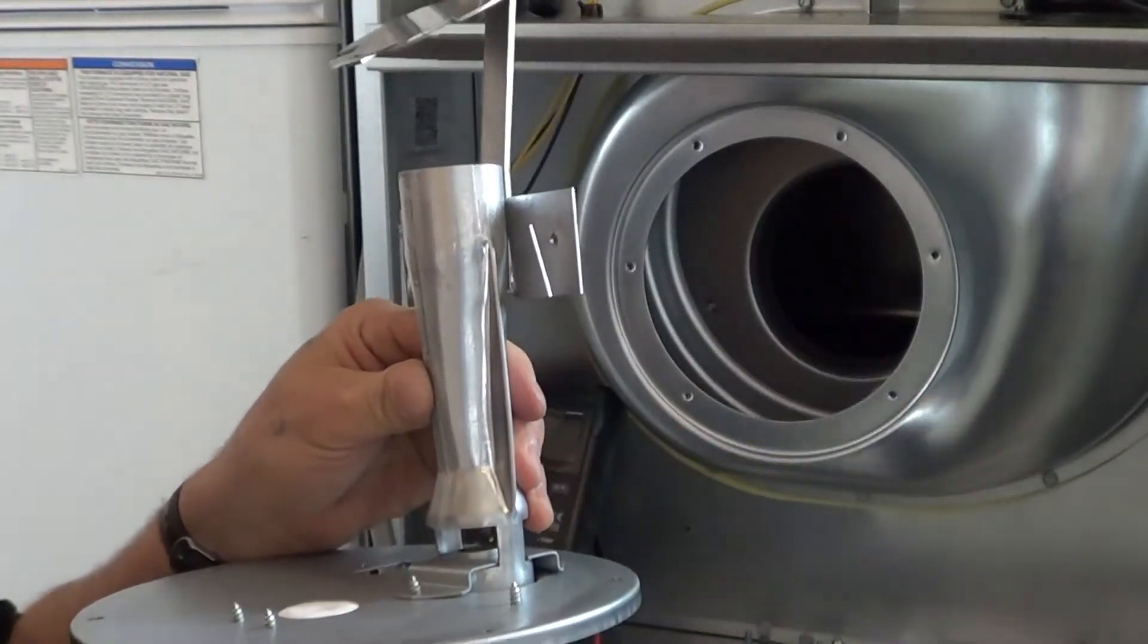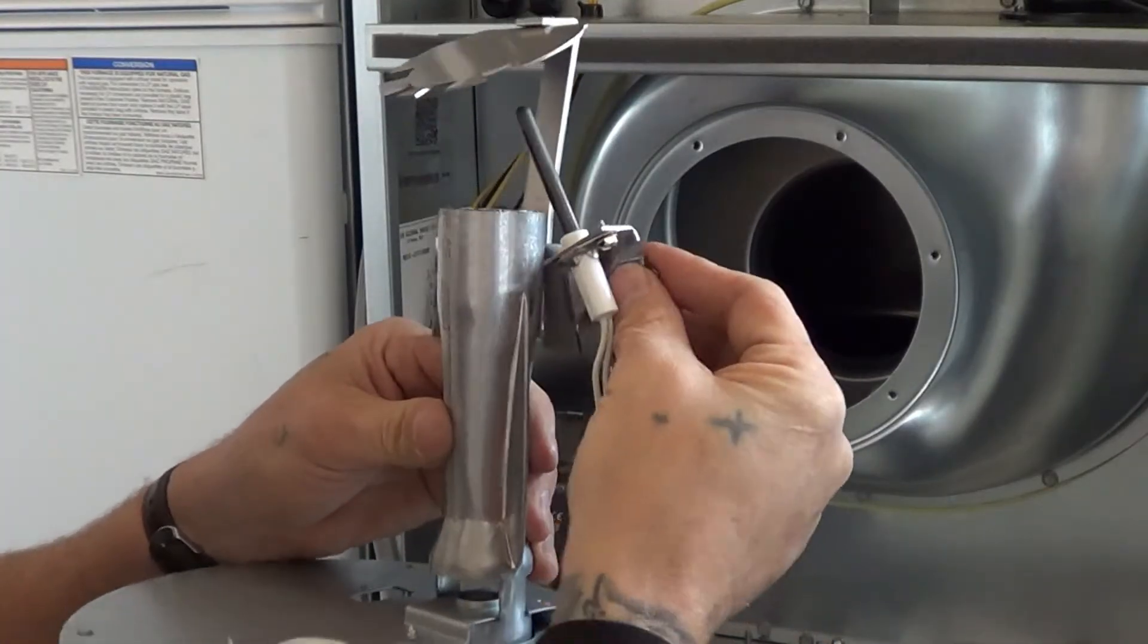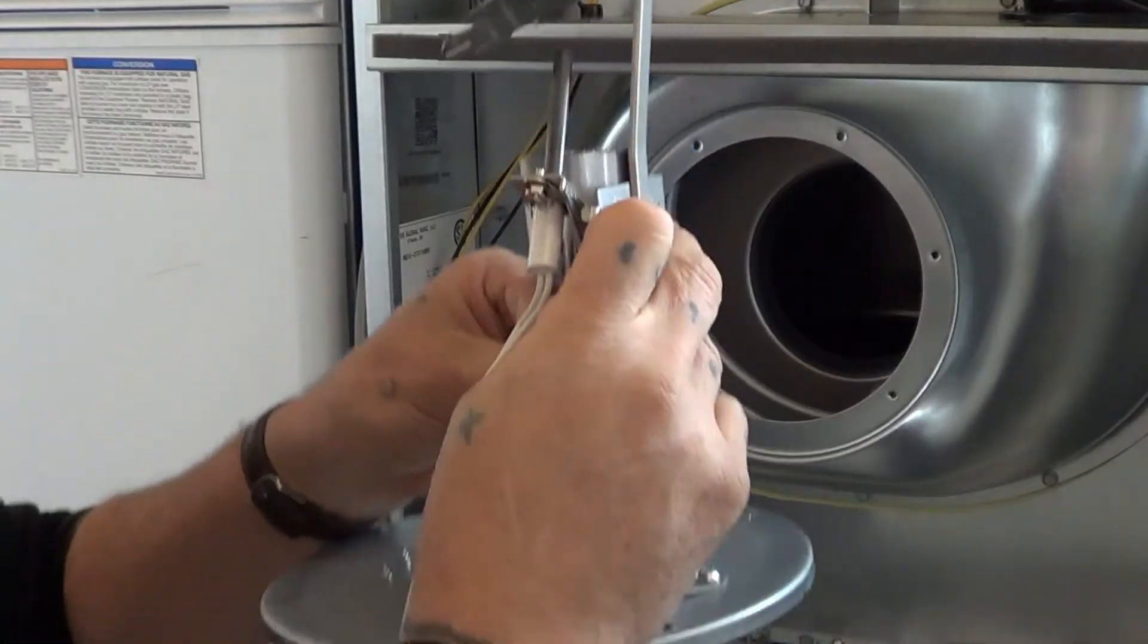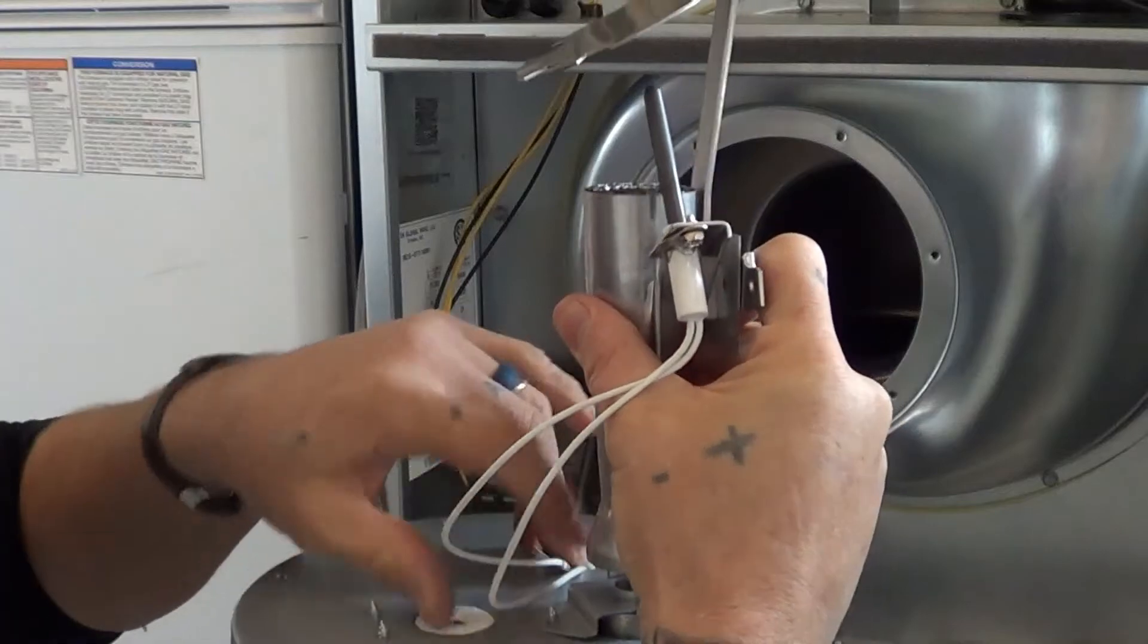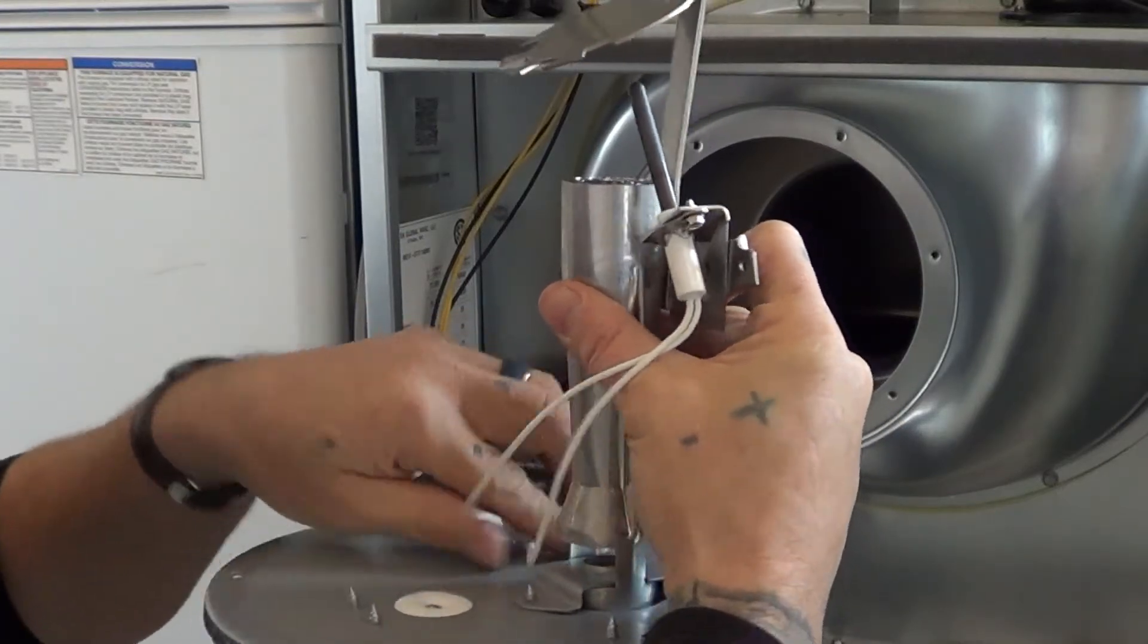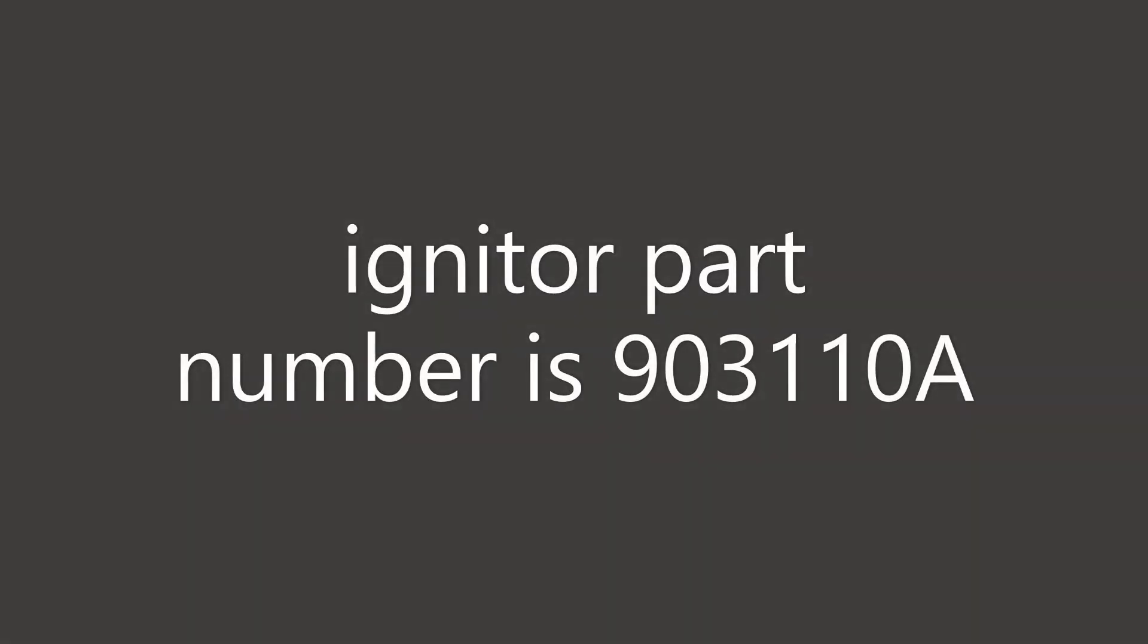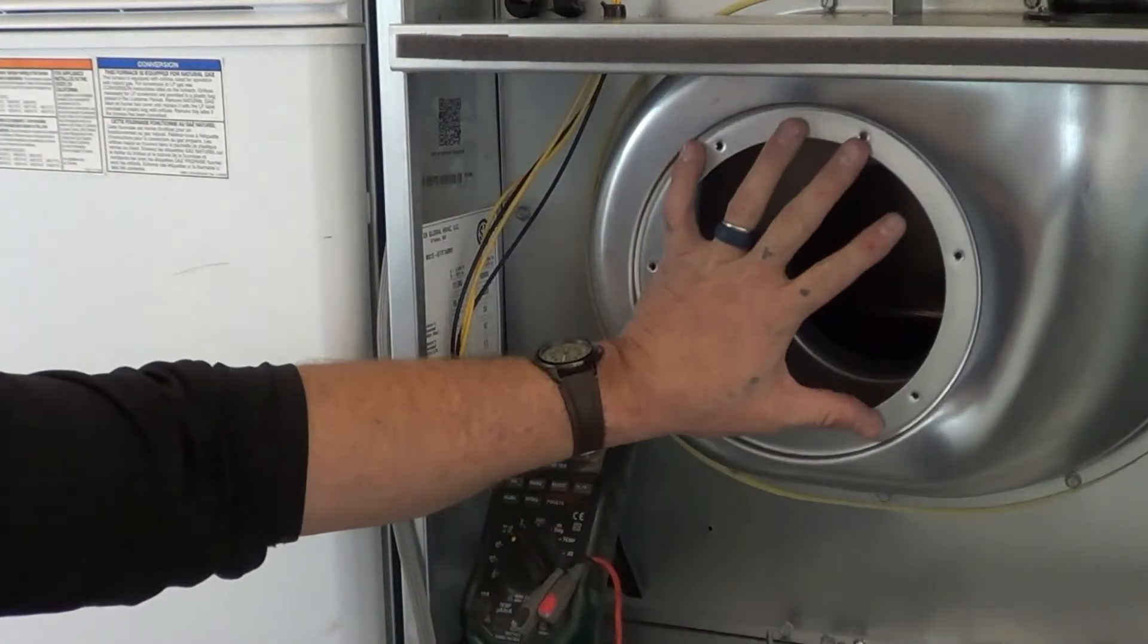We take the screw off the back right there, slide that right out, get the new one, put it back in, put that screw back in there, push the wires back through the hole, and just reverse that process.